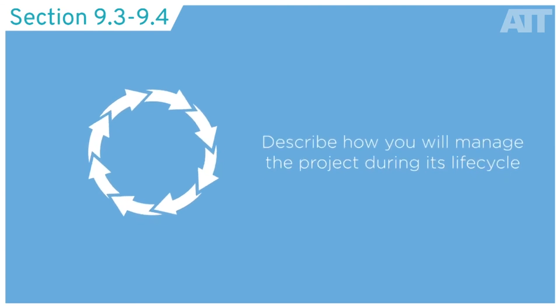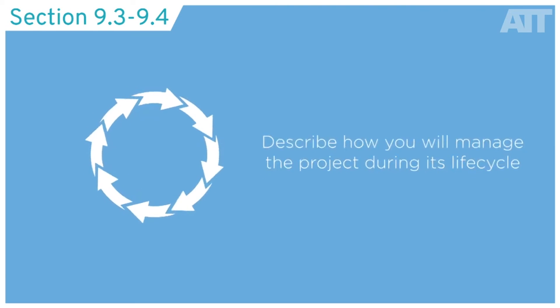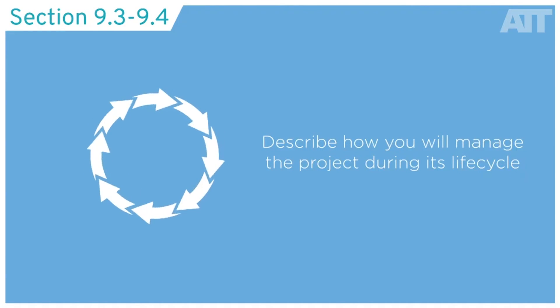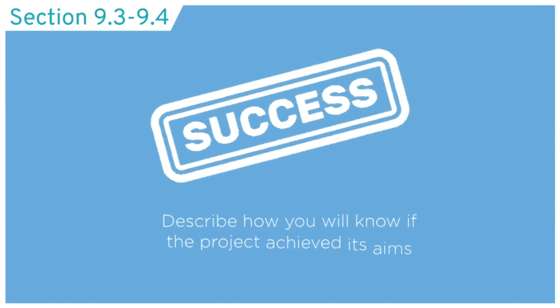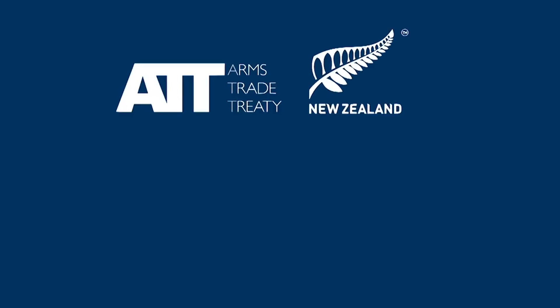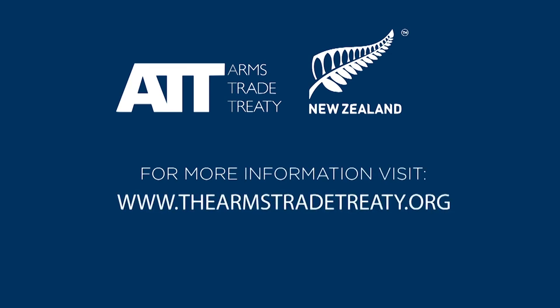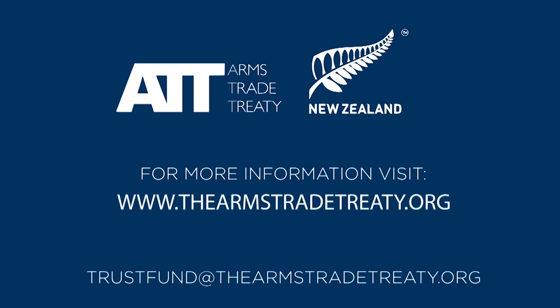In Sections 9.3 and 9.4, you should provide a description of how you intend to manage the project during its lifecycle and how you will know if the project achieved its aims. Thanks for taking time to learn more about the grant application form. Further information is available online or by contacting the ATT Secretariat. We wish you every success with your application.